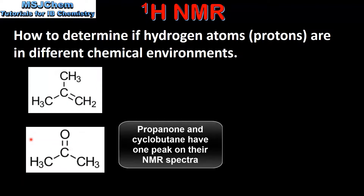Next we look at propanone. In propanone we have two CH3 groups and the protons in both CH3 groups are in the same chemical environment. If we look at the group of atoms to which both CH3 groups are bonded we can see it's the same group, in this case a carbonyl group. Therefore the protons in both these groups are in the same chemical environment.